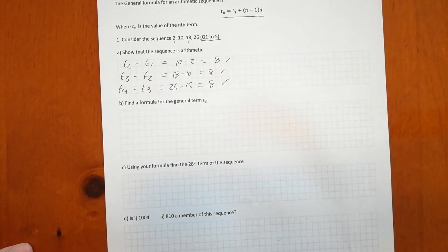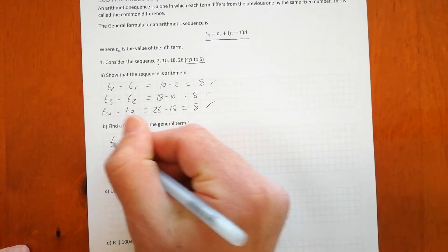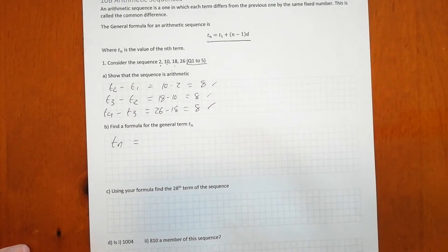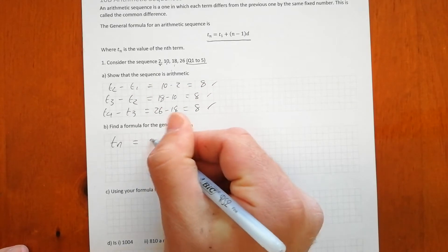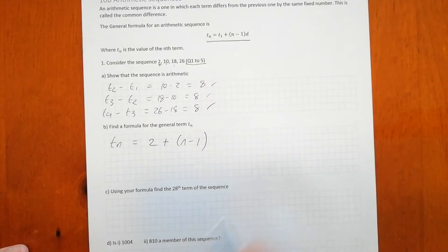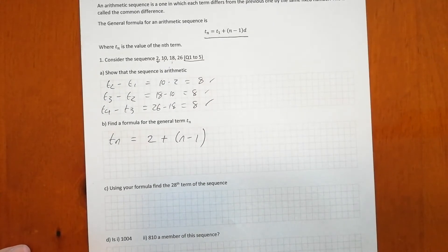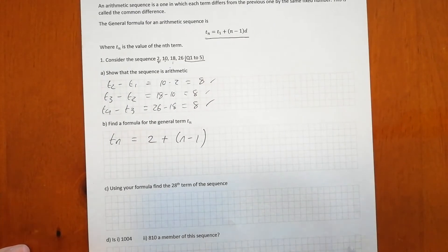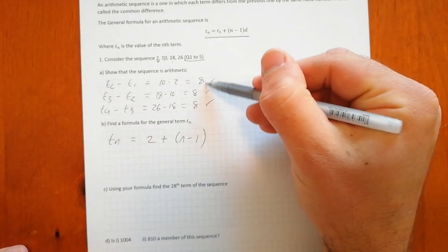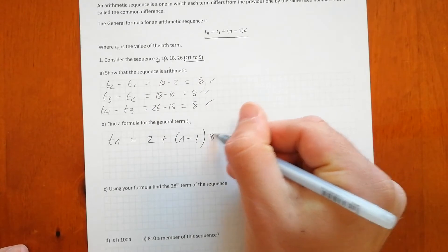Find a formula for the general term Tn. So this is where we're going to use this rule here. We've got the nth term is equal to T1, T1 is the first term which is 2, so it's equal to 2 plus n take 1. n just refers to the nth term, so that doesn't have a specific value. And the value of d is 8, that's the difference between each subsequent term. So we've got an 8 in there.